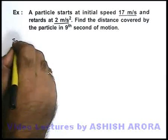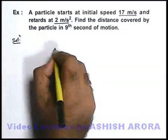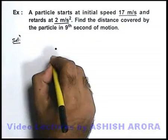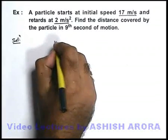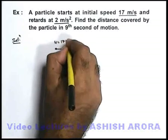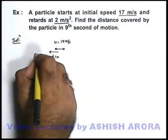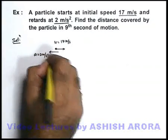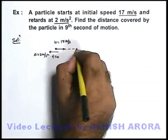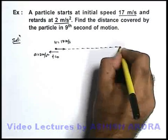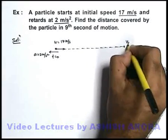Let's draw the physical situation in this question. We have a particle - at t equal to zero it starts with an initial speed of 17 meters per second, and it is retarded with an opposite acceleration of 2 meters per second squared. So gradually its speed will decrease, and after some time its final velocity becomes zero.